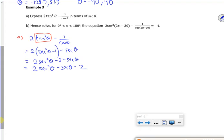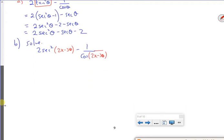Part b says, hence solving. Now it looks exactly the same, but I've got 2x minus 30. So for part b, I'm going to solve 2 secant²(2x-30) minus 1 over cos(2x-30). So what it does is, it just changes when I'm handing my answer.